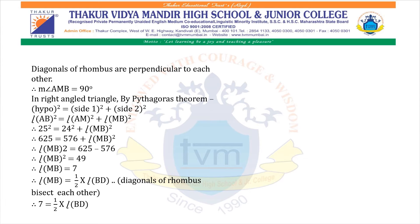Diagonals of a rhombus are perpendicular to each other, so angle AMB = 90 degrees. In right-angle triangle AMB, by Pythagoras theorem: AB² = AM² + BM². Therefore, 25² = 24² + BM², giving 625 = 576 + BM². So BM² = 625 − 576 = 49. Since 49 is the square of 7, length MB = 7 cm.